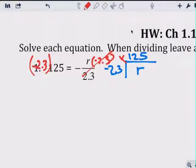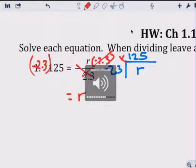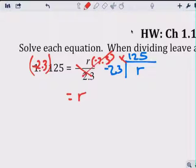Cancels that out, leaves you r by itself. Use a calculator to find your answer. So, if you use a calculator, 125 times 2.3, you will get 287.5 as your answer for r.